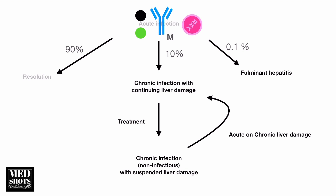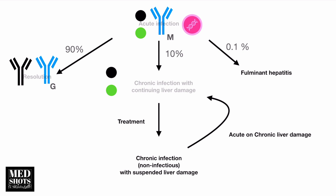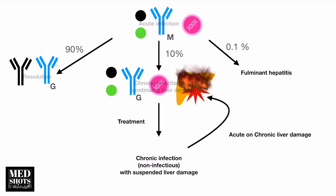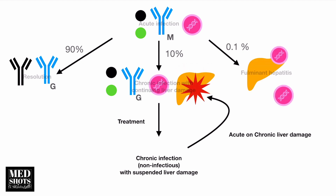With resolution, anti-HBs antibody appears, meaning the patient is no longer suffering from Hepatitis B, along with anti-HBc IgG. In chronic infection, HBeAg with good infectivity may or may not be seen; anti-HBc IgM converts to anti-HBc IgG; there is still replicating viremia causing liver damage.